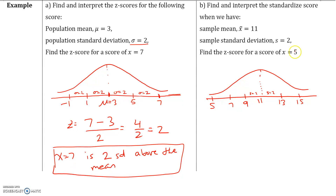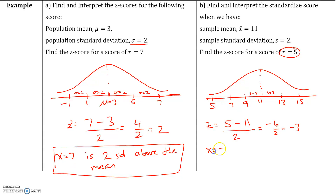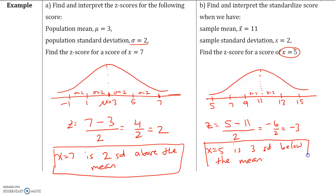Let's find the z-score of x equals 5. We should already know that 5 is 3 standard deviations below the mean, but let's verify that. The z-score is equal to 5 minus the mean x-bar of 11, divided by the standard deviation, giving us negative 6 divided by 2, which is negative 3. A z-score of negative 3 means x equals 5 is three standard deviations below the mean. The z-score tells us how many standard deviations away from the mean, either above or below, a data value is.